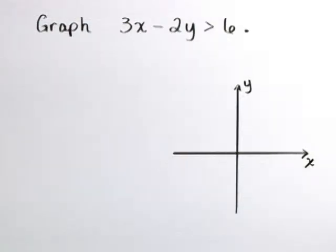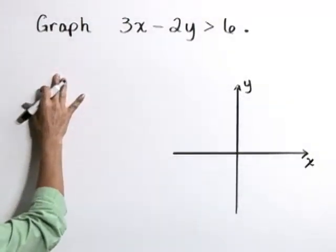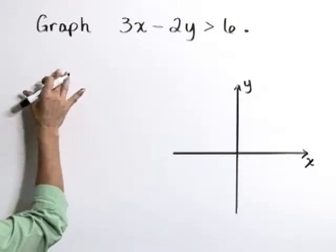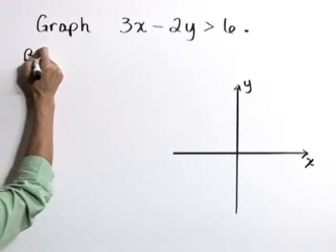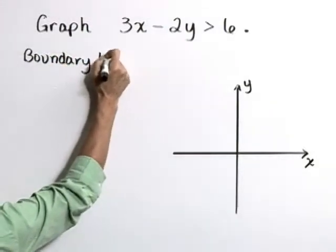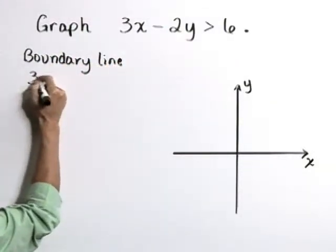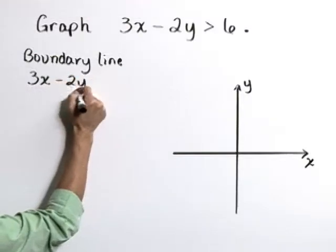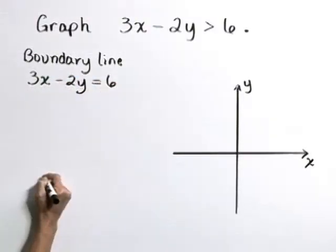Now we're going to start by graphing our boundary line, 3x minus 2y is equal to 6. So that boundary line, 3x minus 2y is equal to 6.